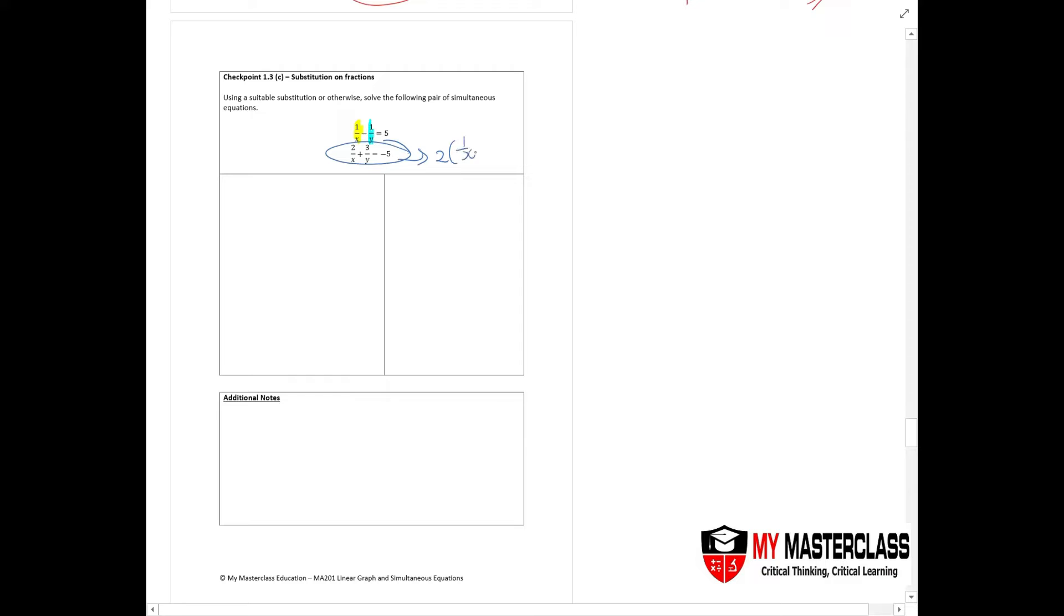You notice that this is technically 2(1/x) + 3(1/y) = -5. So what will I do? Same thing, I'll name this as equation 1 and this as equation 2. I'll take from equation 1, I will have 1/x = 5 + 1/y, so this makes this equation 3. Because I used equation 1, I'll take equation 3 and substitute it into equation 2.